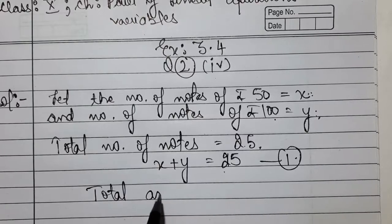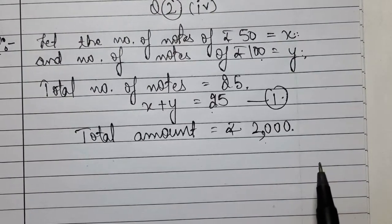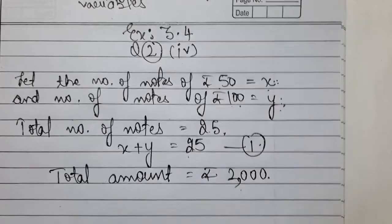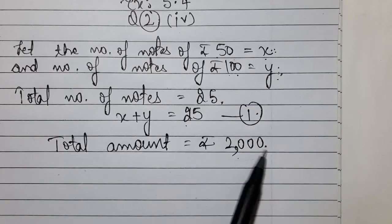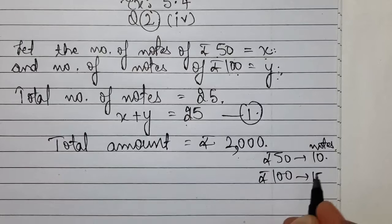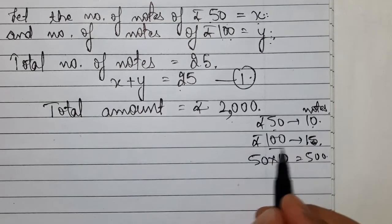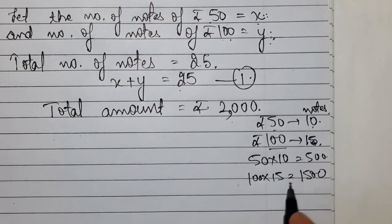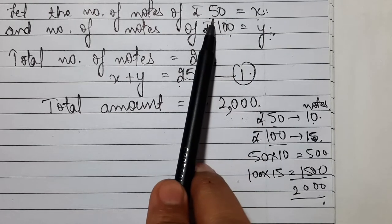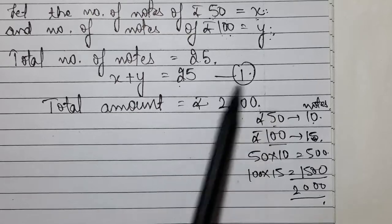Now we form the equation for the total amount of Rs. 2000. The amount comes from Rs. 50 notes and Rs. 100 notes. For example, if Rs. 50 notes are 10, then 50 × 10 = 500. And if Rs. 100 notes are 15, then 100 × 15 = 1500. So 500 + 1500 = 2000. Therefore the equation is 50x + 100y = 2000.